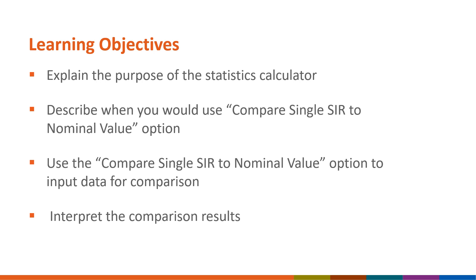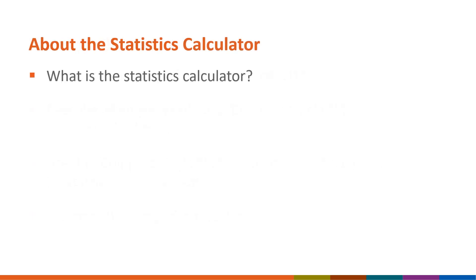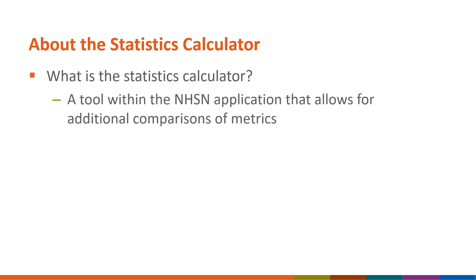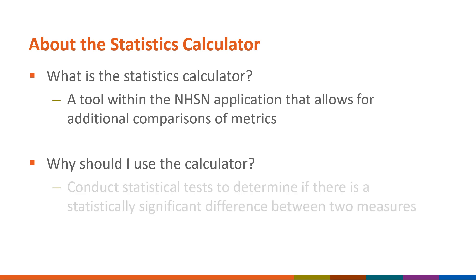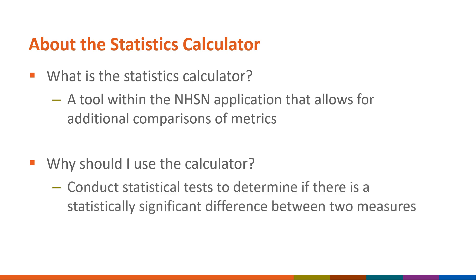Let's get started with the purpose of the Statistics Calculator. What is the Statistics Calculator? It's a tool within the NHSN application that allows additional comparisons of two measures or metrics to be made. The Statistics Calculator allows you to conduct statistical tests to determine if there is a statistically significant difference between two measures. We will just be focusing on one of the options: Compare Single SIR to Nominal Value.